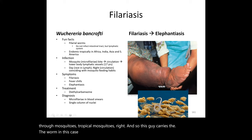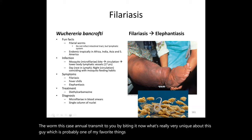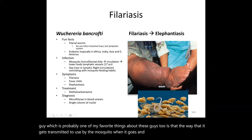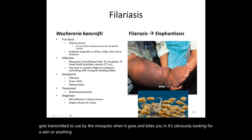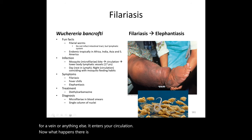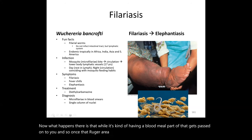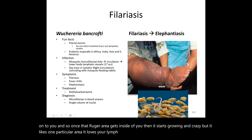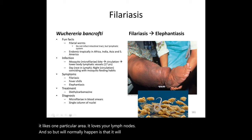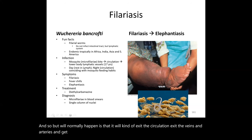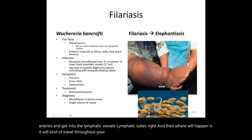The mosquito carries the worm and transmits it to you by biting — while looking for a vein, it enters your circulation. During its blood meal, part of the Wuchereria gets passed on to you. Once inside, it starts growing and gravitates to a very specific area: it loves your lymph nodes. It exits the circulation and gets into the lymphatic vessels, traveling throughout your body until it finds a lymph node.